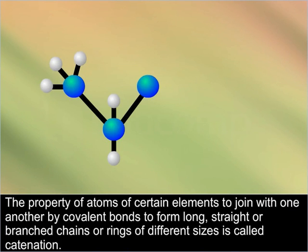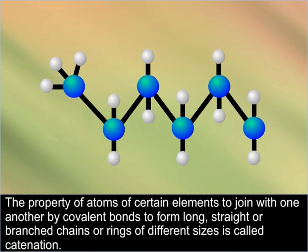The property of atoms of certain elements to join with one another by covalent bonds to form long, straight or branched chains or rings of different sizes is called catenation.